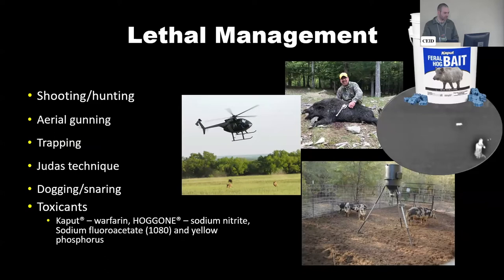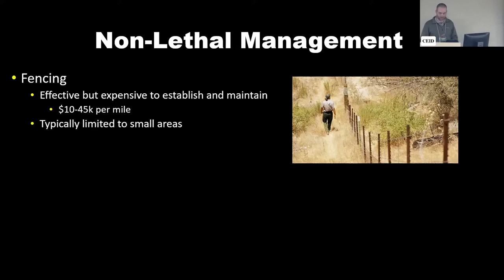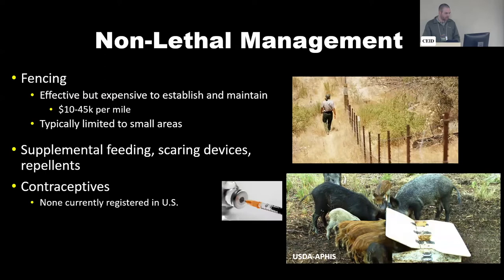The non-lethal side of management is more temporary in nature and variable in effectiveness. One commonly used method is exclusion fencing, but it's very expensive and limited in scope — you're not going to fence an entire national forest. There are also supplemental feeding and repellents with varying levels of success, typically temporary. Along the same vein as toxicants, we have contraceptives — none currently registered for use in the United States, but they are out there.